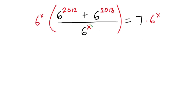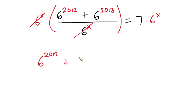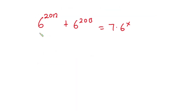So that the denominator will cancel right away. We then have 6 to the power 2012 plus 6 to the power 2013 is equal to 7 times 6 to the power x.